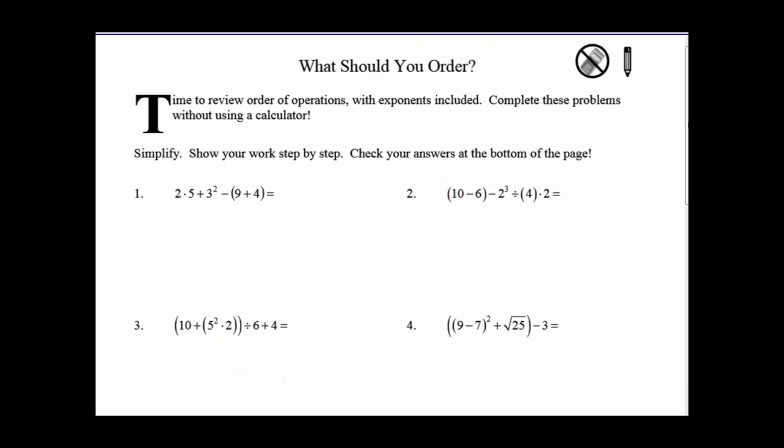1-2b. What should you order? We're going to review these order of operations. We're going to do a couple and then leave you to do some on your own. Number 1. Applying everything that we've had. Remember PEMDAS. Parentheses. So we're going to have to do the 9 plus 4. We have 2 times 5 plus. We can do the exponent and get 9. And then minus 13. Order of operations says multiplication. So we're going to go 10 plus 9 minus 13. So we have 19 minus 13, which is 6.